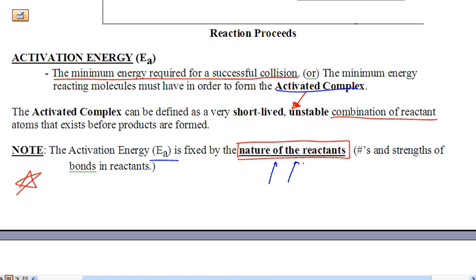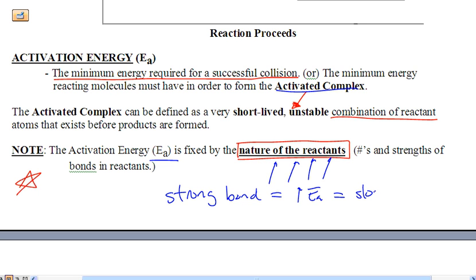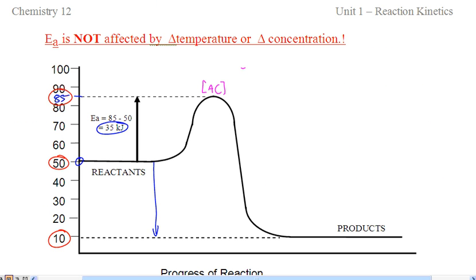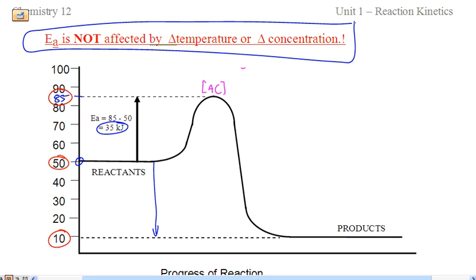The EA is determined by the nature of reactants. If the reactant has a very strong bond, it's going to take a lot of energy to break it, so the EA will be high: strong bond equals high EA equals slow reaction. The opposite is also true — weak bonds mean a low EA and a fast reaction. Importantly, the nature of the reactants is not affected by changing concentration, temperature, volume, or pressure, so the EA is not affected by temperature or concentration. That will be a quiz question.